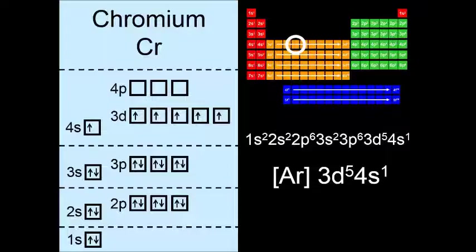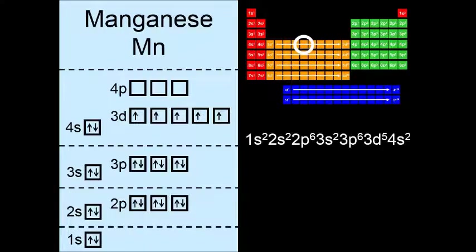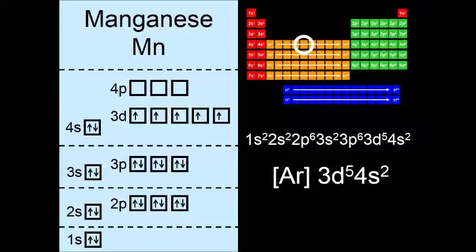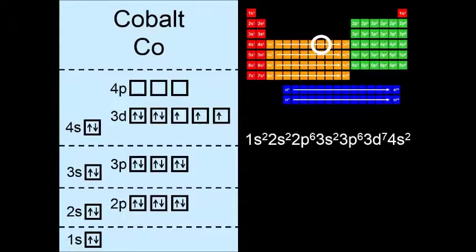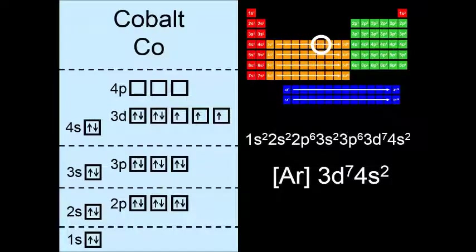And moving on to manganese. It's what you'd expect. So 3d5 4s2. And after manganese, we have iron and cobalt and nickel.